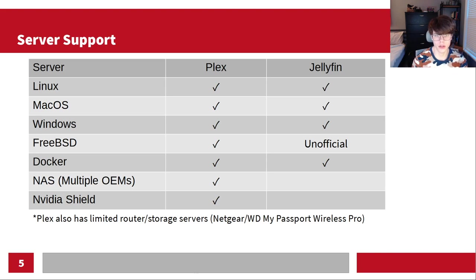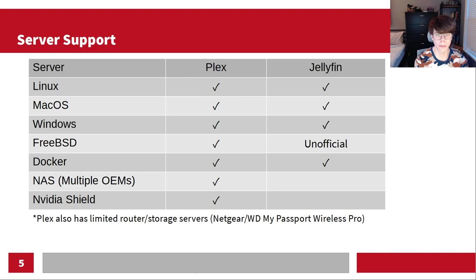Nvidia Shield is one that is primarily only on Plex — it's something they really targeted. Plex also has limited router and storage server support: I think it's three Netgear routers that can run Plex, and the WD My Passport Wireless Pro can also run Plex. I wouldn't really recommend those use cases long-term, though the router could be beneficial. The WD My Passport Wireless Pro might work as something you're taking mobile, which is what Plex is good for — having your content with you without carrying anything around.